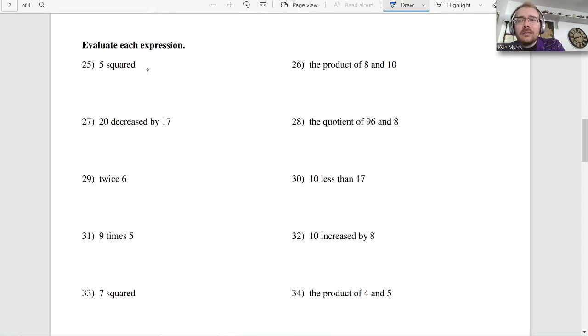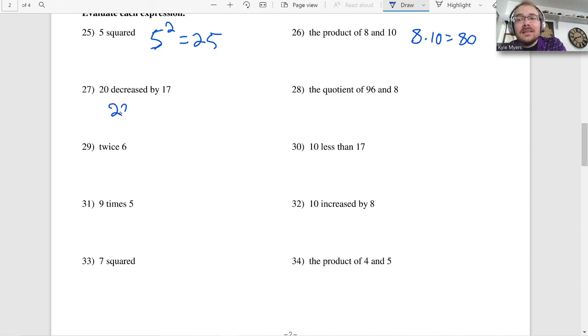Evaluate each expression. So 5 squared, that's this. 5 squared is 25. 5 times 5. Be careful not to multiply by 2. Remember, if it's a little baby 2, it's not multiply. It's just as much multiplying as multiplying is adding. If that makes sense. Like 2 times 3 is also 2 plus 2 plus 2. Because that's what 2 times 3 means. But 2 times 3 is multiplying. You can think of it as adding. But is it? Is it really? It's not. It's repeated adding. So 5 squared is 25. You can either just remember that. Or you can remember that 5 squared means 5 times 5. Product of 8 and 10. Product means multiply. 8 times 10 is 80. 20 decreased by 17. If it says decreased by, you go in order. So 20 minus 17 is 3.